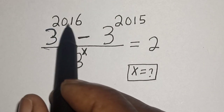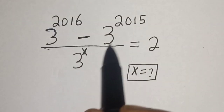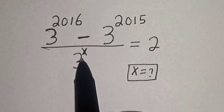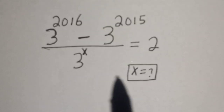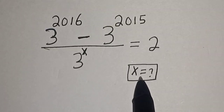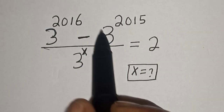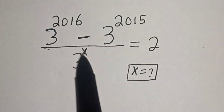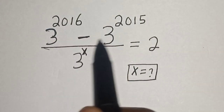3 raised to power 2016 minus 3 raised to power 2015, divided by 3 raised to power s, is equal to 2. What is the value of x? Hi everyone, welcome to my class. In this class, we want to find the value of s from this equation.